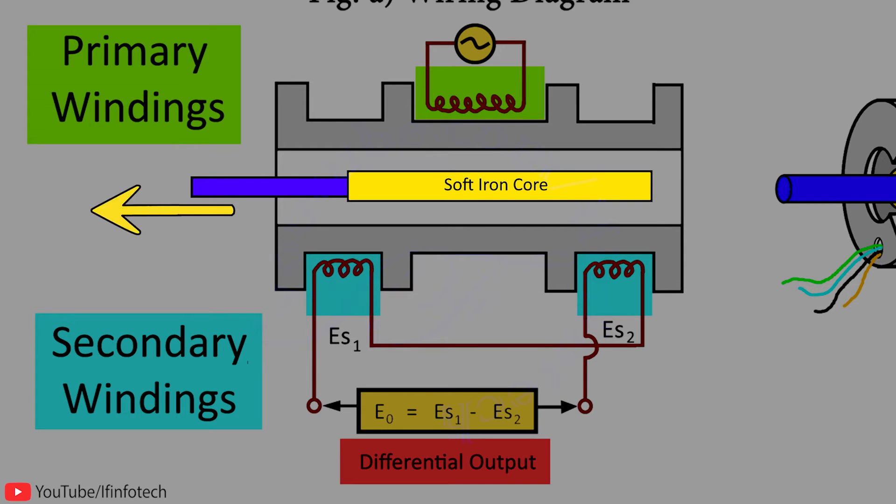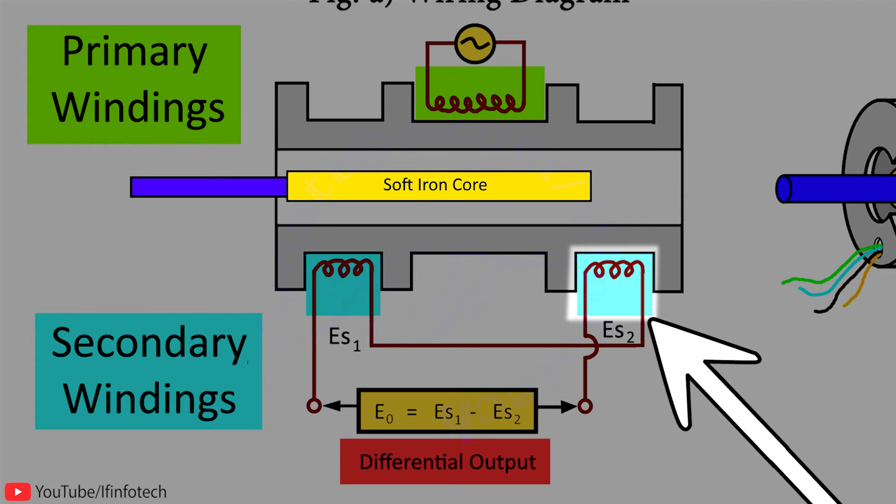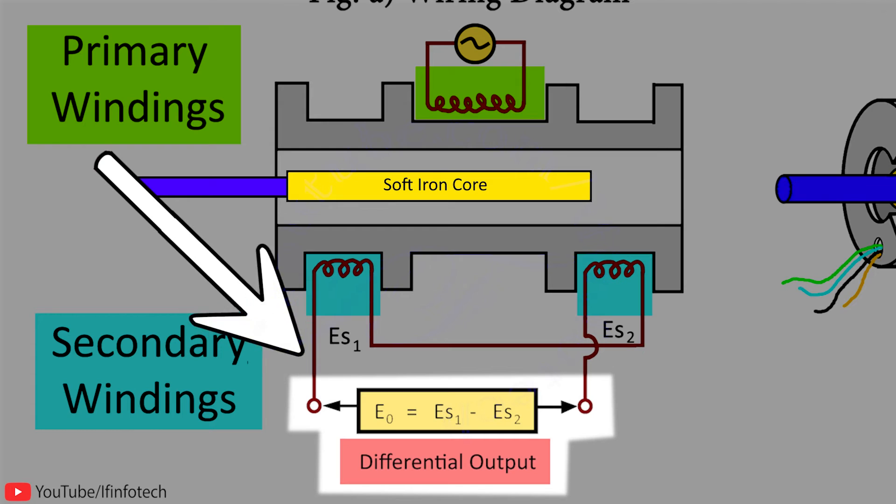When the core is moved towards the left side, then flux linking to coil S1 will increase. At the same time, flux linking to coil S2 decreases. Hence, EMF induced in coil S1 is greater than that of S2. As a result of which, output measured between secondary terminals is in phase with primary voltage.